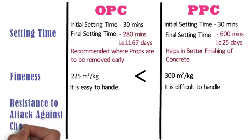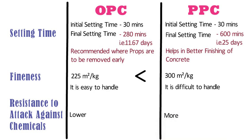Resistance to chemical attack. In case of OPC, resistance to attack against sulphates, alkalis, chlorides, and chemicals is lower compared to PPC. Whereas PPC has greater resistance towards attack by sulphates, alkalis, chlorides, and chemicals as compared to OPC.